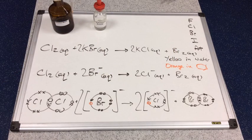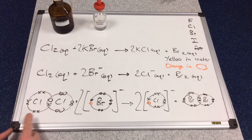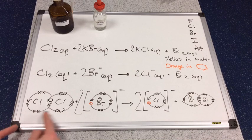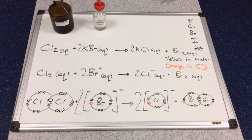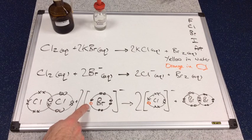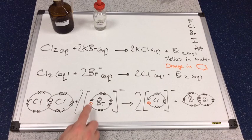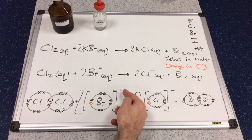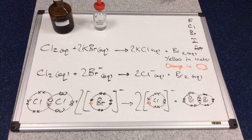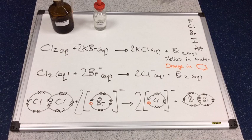We'll have a look at the equations now to explain what's gone on in that reaction. So, we'll start with the dot and cross diagram. Hopefully this will bring it to life for you. We started off with the chlorine molecule. So, we've got two covalently bonded chlorine atoms. And we had two bromide ions. That orange electron is key to explaining what's going on here.